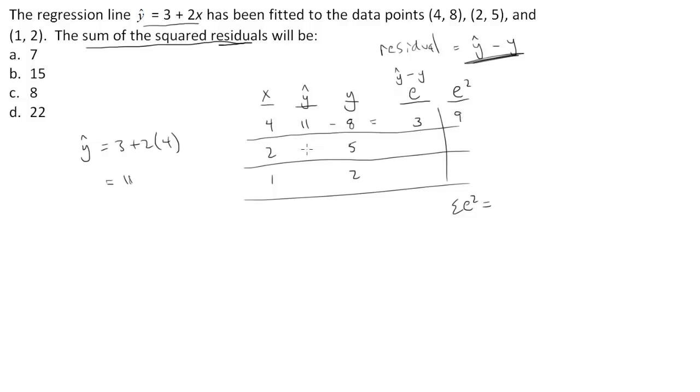My next predicted y, I'm going to put in the next value of x, which is 2. So 3 plus 2 times 2 gives me 7. So 7 goes here. To find the residual, I need the difference between the predicted and the actual y, so you can see that this is a 2. And when I square that, I get a 4.